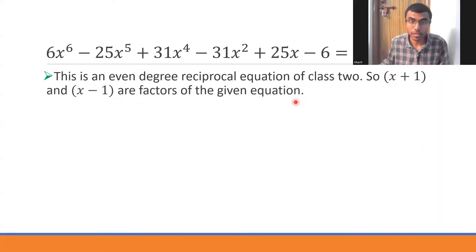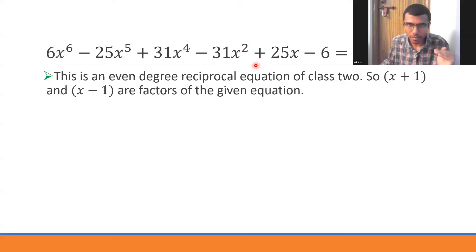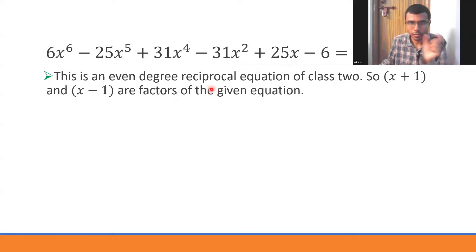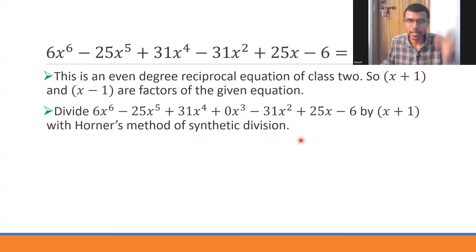For an even-degree reciprocal equation of Class 2, x+1 and x-1 are factors of the given equation. You can verify by trial and error: f(-1) = 0 and f(1) = 0, so we get two roots. We need to divide the expression by these two factors successively. I'm going to first divide by (x+1) using Horner's method of synthetic division, not the standard long division method.